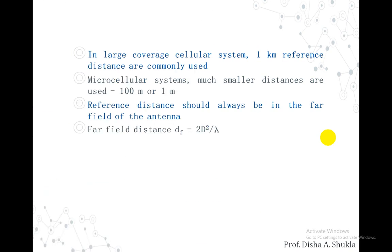In a large coverage cellular system, 1 km reference distances are commonly used. For a microcellular system, much smaller distances are used, i.e., 100 m to 1 m. The reference distance should be in the far field of the antenna, and the far field distance can generally be calculated as df = 2D² / λ, where λ is the wavelength of the system.